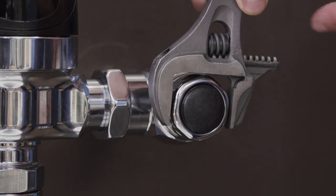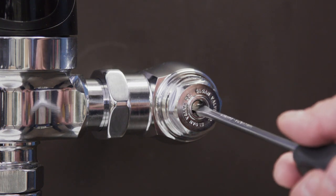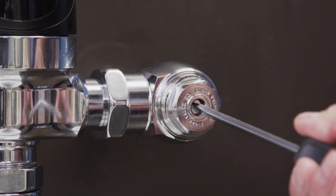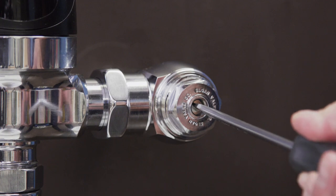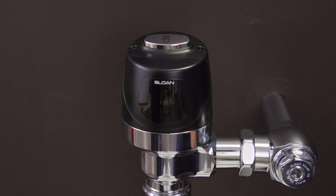First, shut off the water to the flushometer. Remove the cap and use a flat blade screwdriver to turn the screw clockwise until the control stop closes. Next, hold down the button to remove any remaining water.